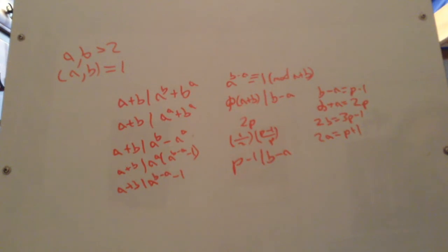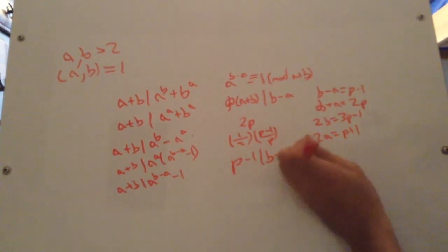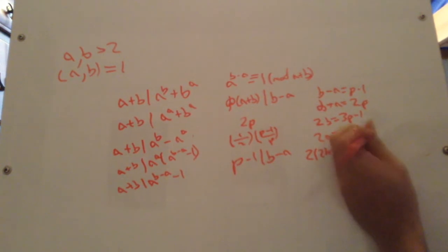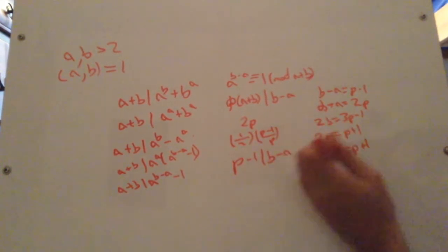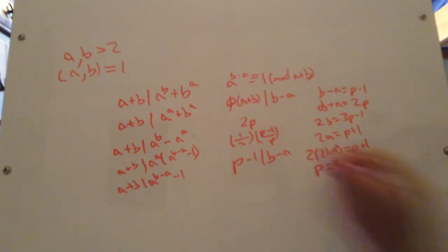And we have to remember, at this point, a is odd. So I'm going to write it as 2k plus 1. So we have 2 times 2k plus 1, or 4k plus 2 equals p plus 1, or p equals 4k plus 1 for some integer k.